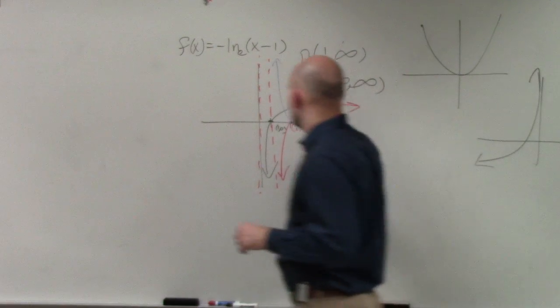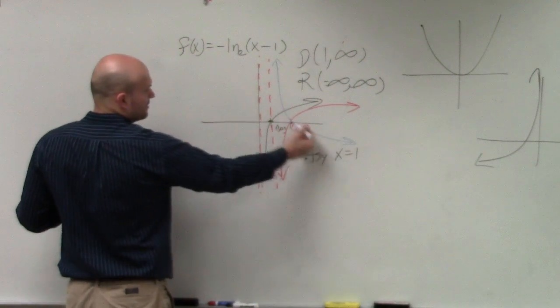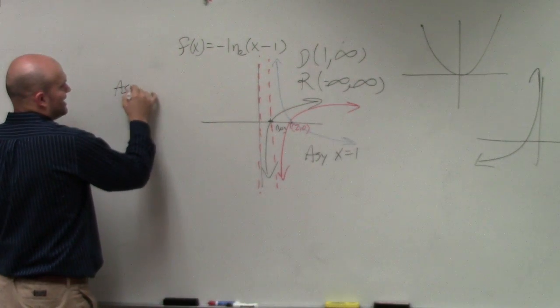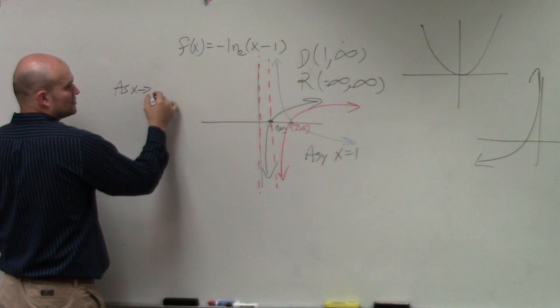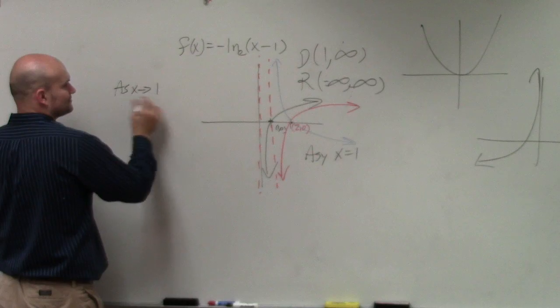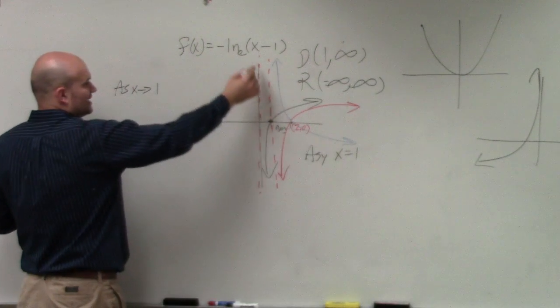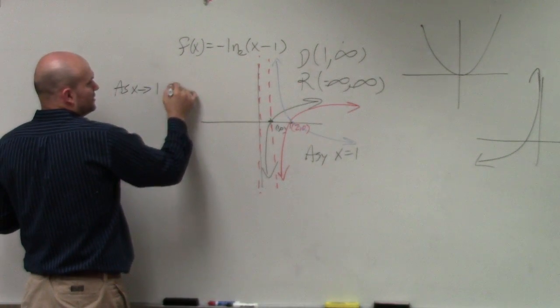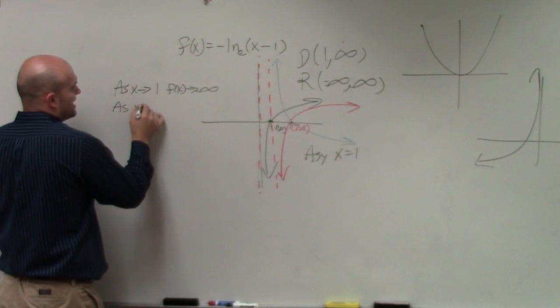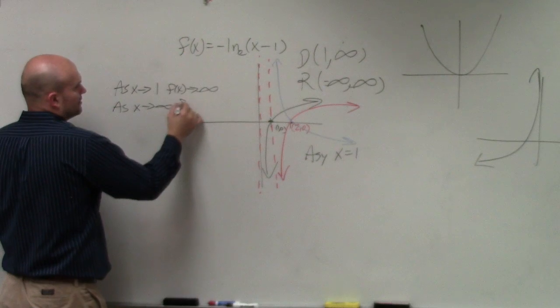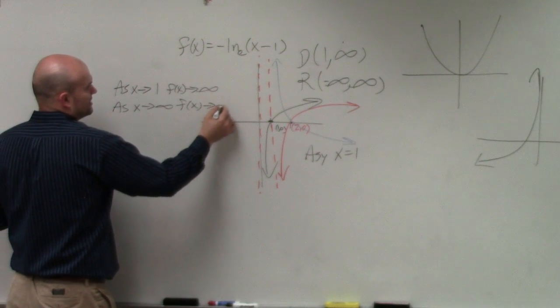And then end behavior. Well, here, you can see that as we're going to the left, as x approaches, we're not going to negative infinity. So as x approaches 1, as the graph approaches that, you can say f of x approaches infinity. And as x approaches infinity, f of x approaches negative infinity.